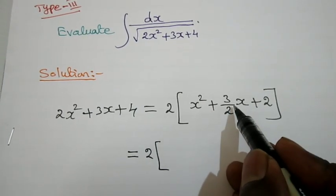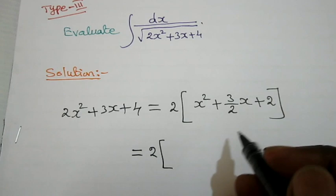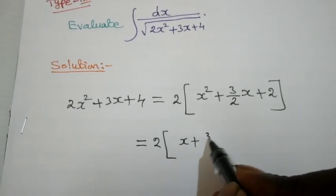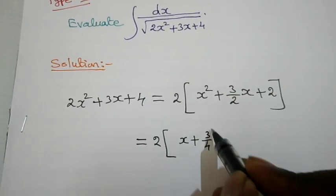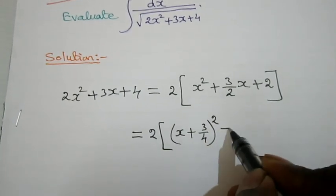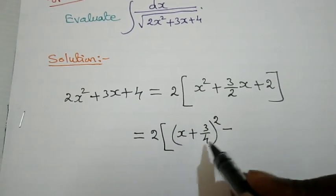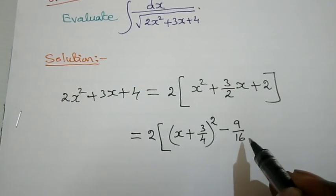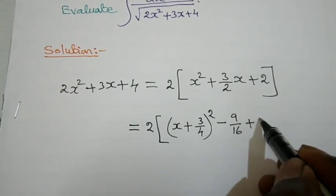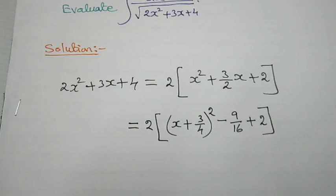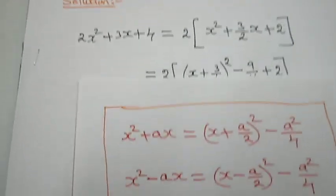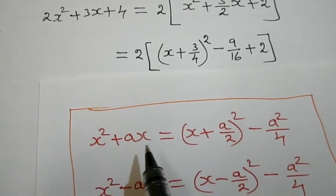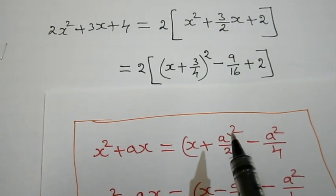Now we can apply the formula. The formula is x squared plus ax equals x plus a by 2, the whole square, minus a squared by 4. So that gives x plus 3 by 4, the whole square, minus 9 by 16, with remaining term 2.